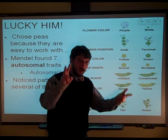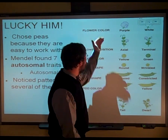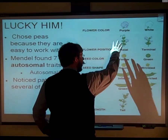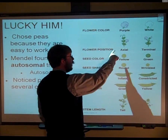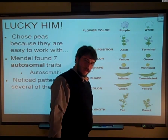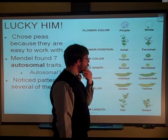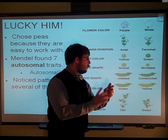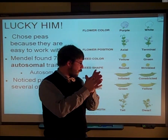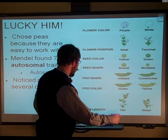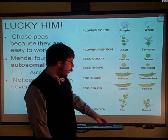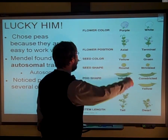He also noticed a pattern, and when we talk about autosomal traits, we're talking about these patterns that Mendel observed. That was flower color — it could be purple or white. You could have the flowers that are axial or terminal, sticking on the end. The peas could be yellow or green. The seeds could be round or wrinkly and shrivelly. The pea pods could be inflated or constricted. And the pods themselves could be green or yellow. In addition to that, the plants could be tall or dwarf.